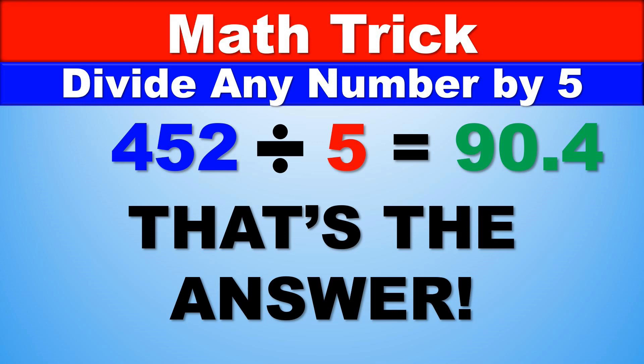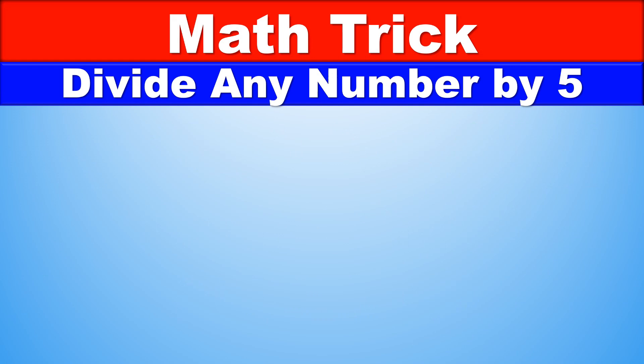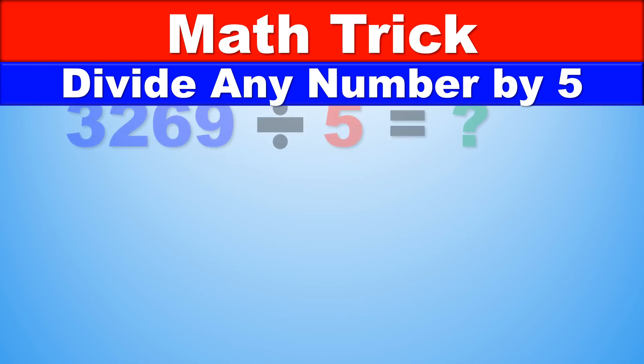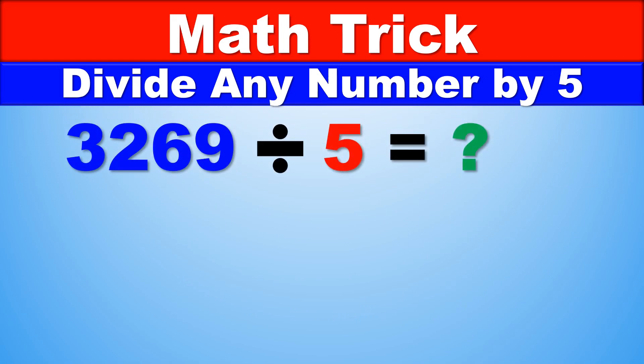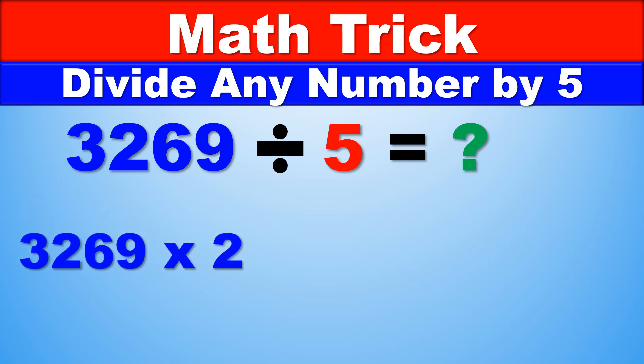Hopefully you should be getting the hang of this by now. So let's do one more example. 3269 divided by 5. And this is the same thing — 3269 times 2 is 6538.